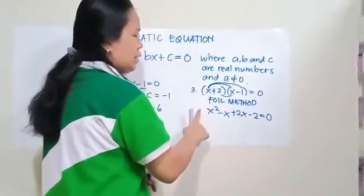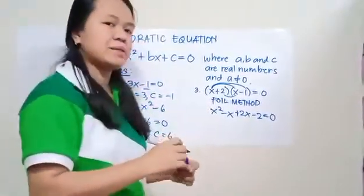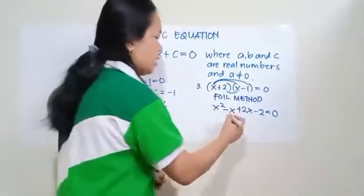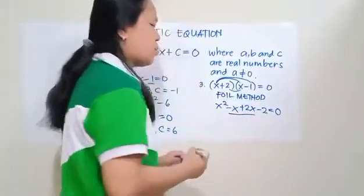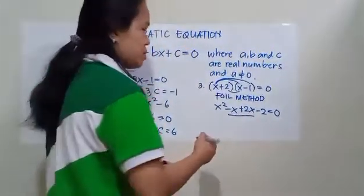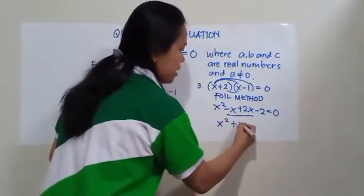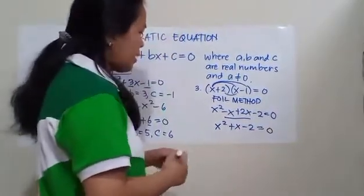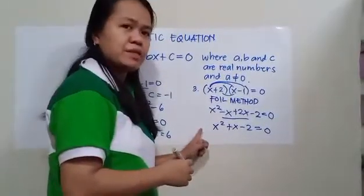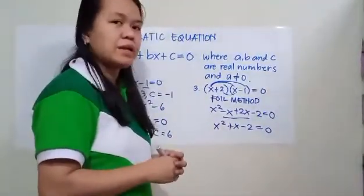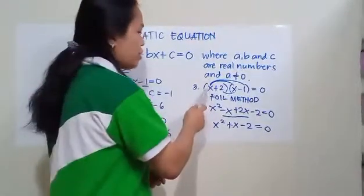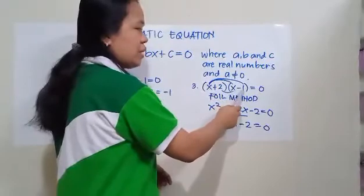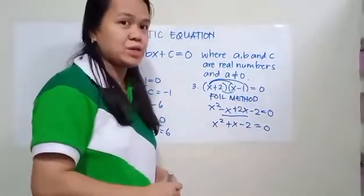Now let us combine similar terms. Negative X plus 2X gives us positive X, so this simplifies to X squared plus X minus 2 equals 0. What can you say about this equation? Is this an example of a quadratic equation? The answer is yes. Therefore, the quantity X plus 2 times the quantity X minus 1 equals 0 is a quadratic equation.